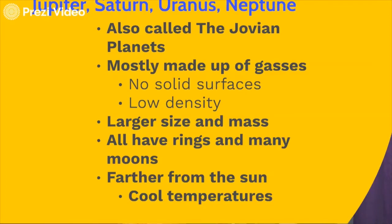They're also the furthest planets from the sun — that's why we call them the outer planets. And when we think in terms of temperature, think of the relationship of where the planet is in relation to the sun. The further away from the sun we get, the colder those temperatures are going to be.